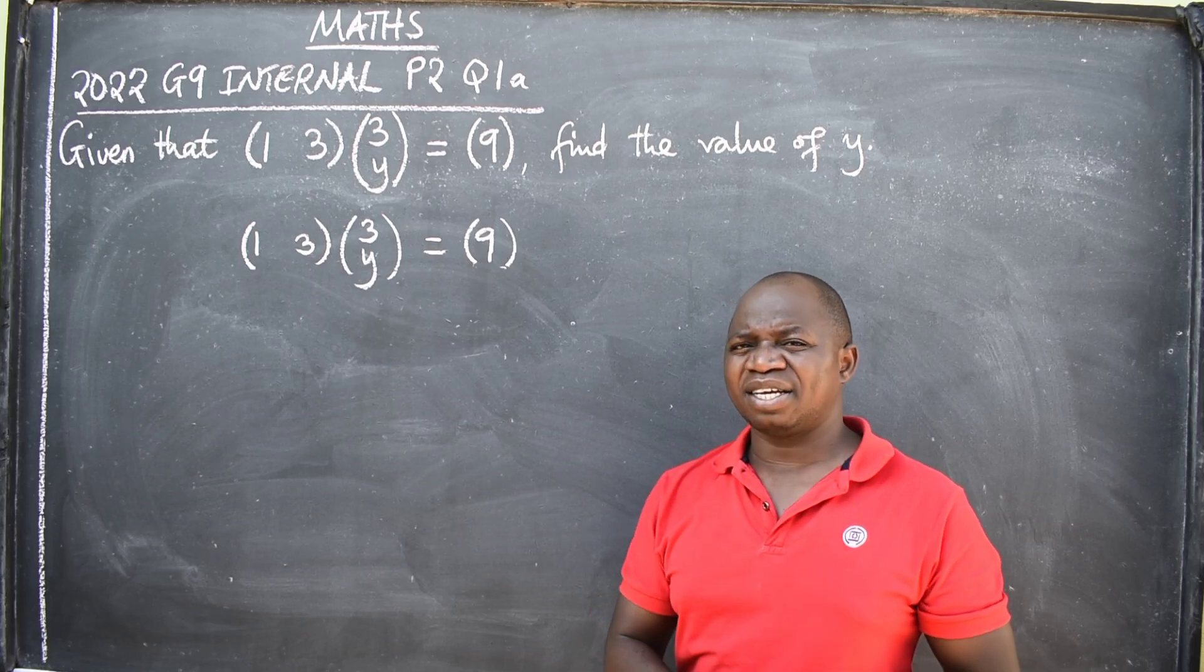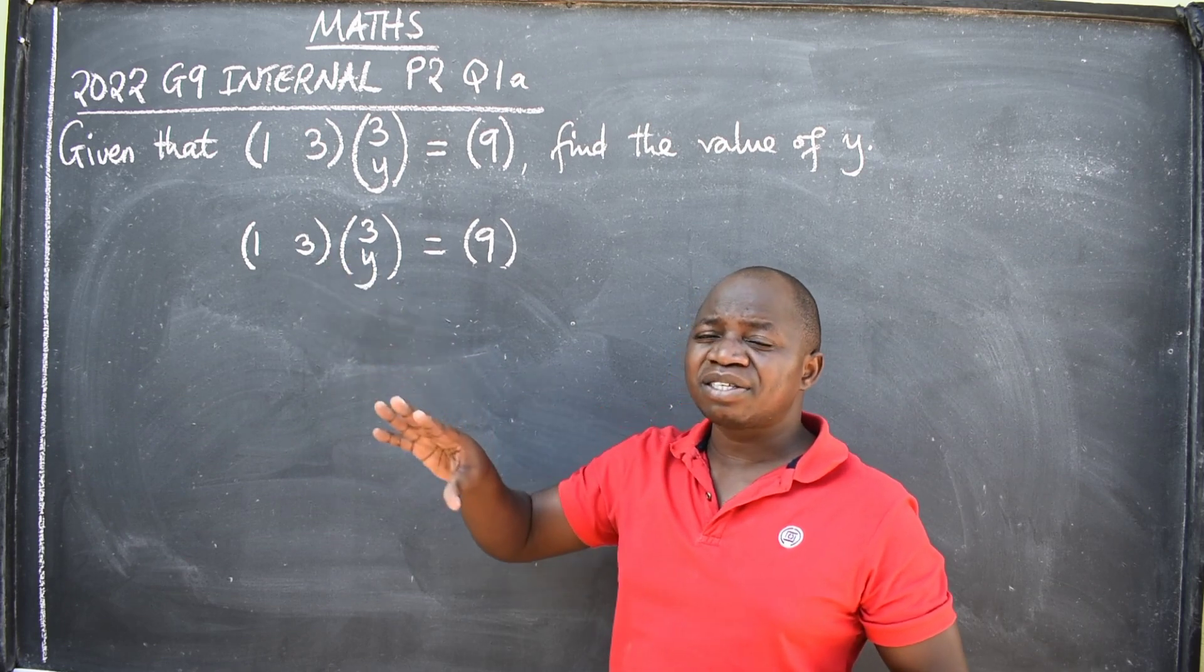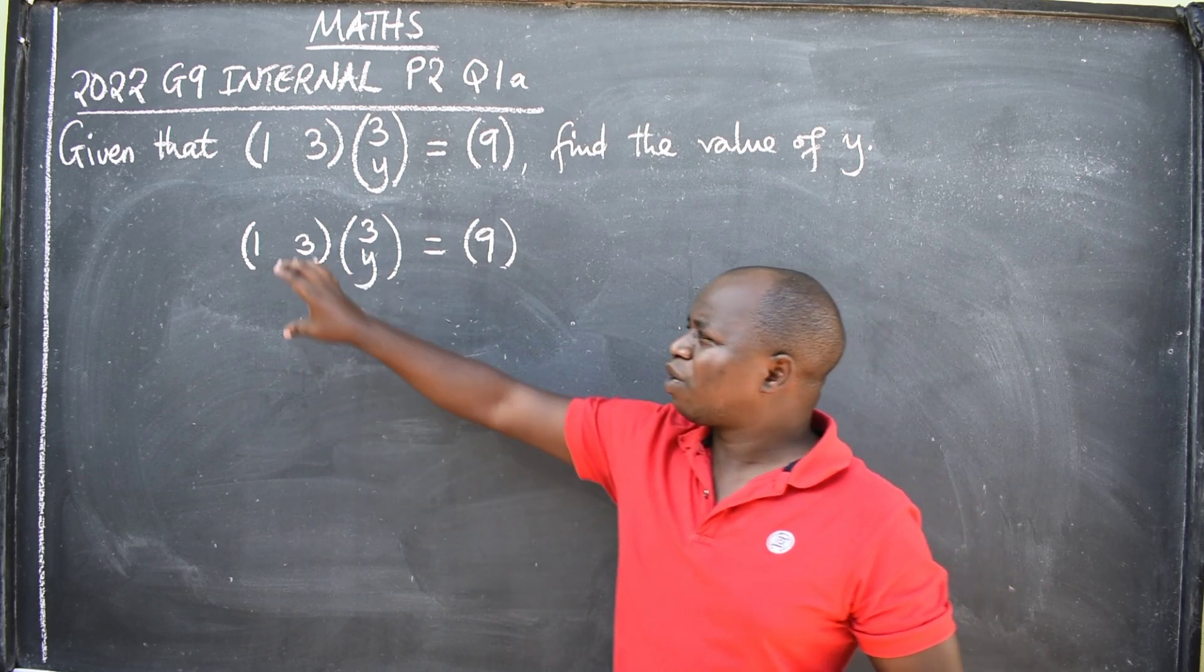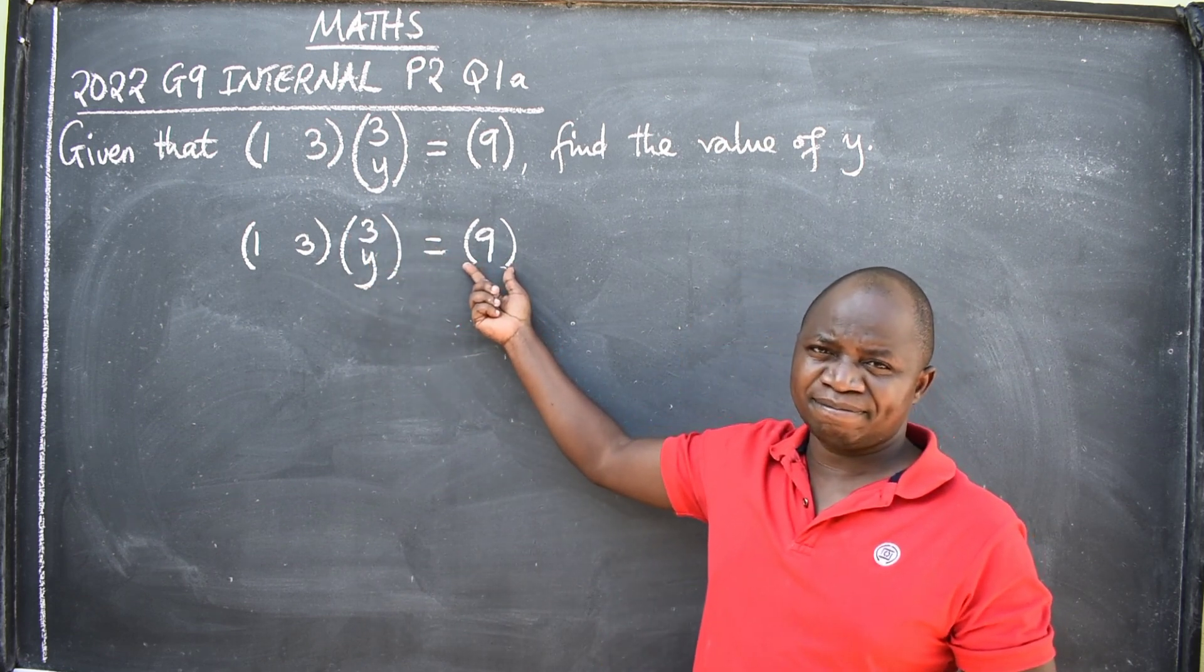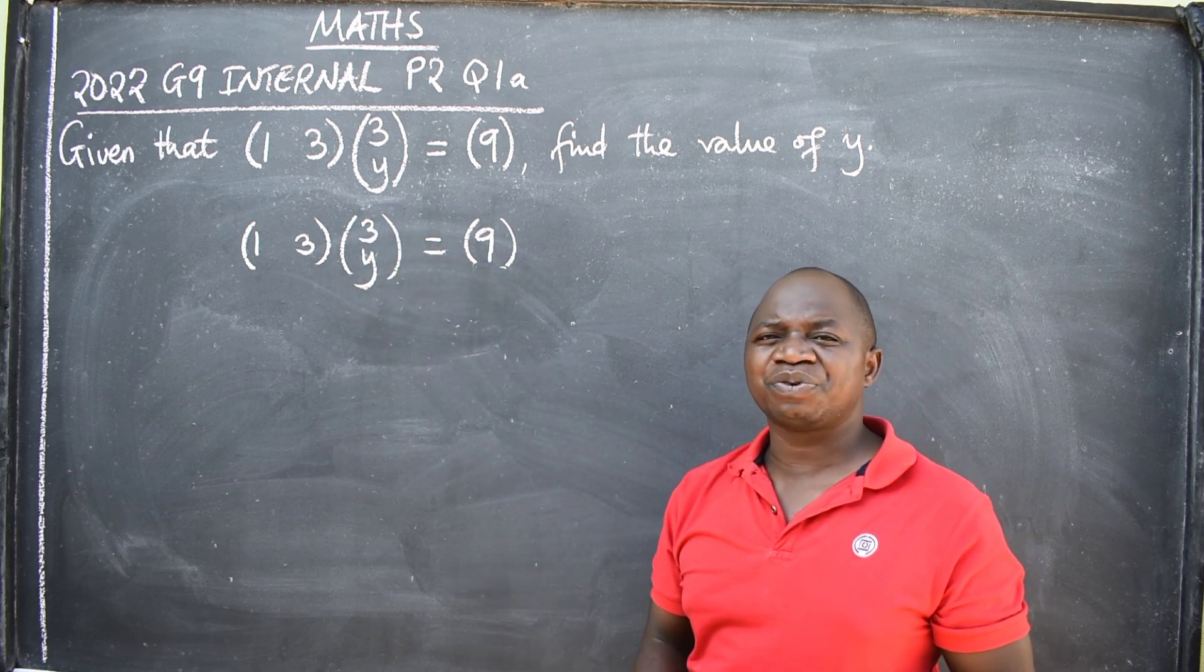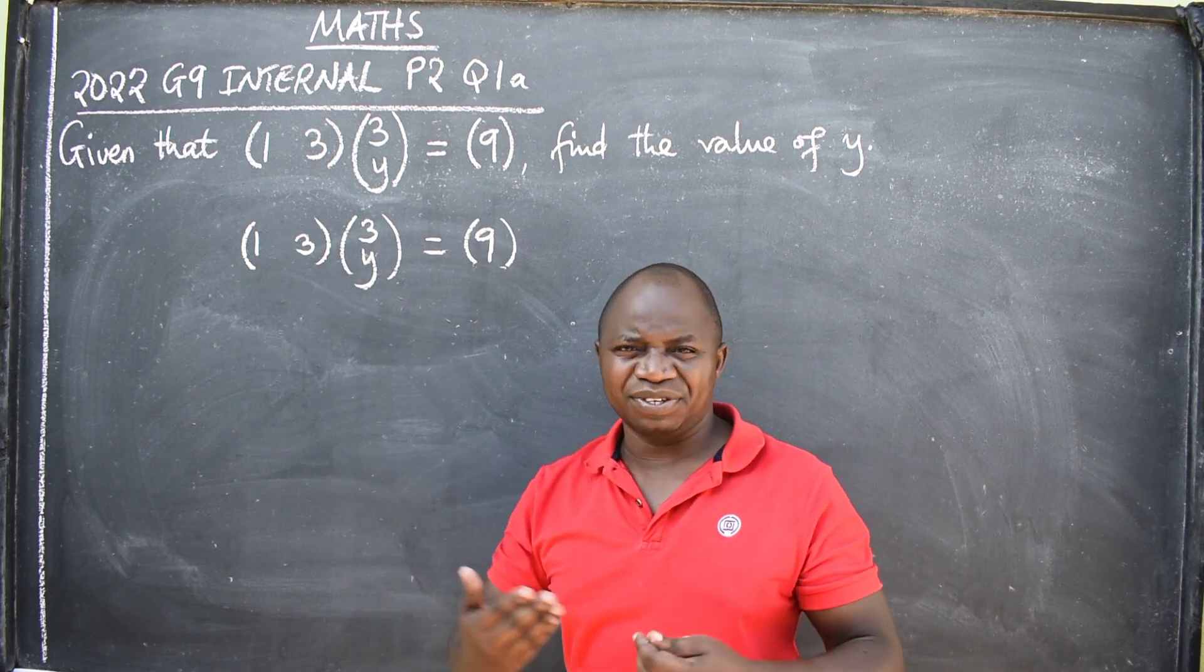So, please, I want you to understand that. If there is no sign, it means multiply. So, you are going to multiply these two matrices, equate to 9. Then you will see what will follow. The question now is, how do you multiply matrices?